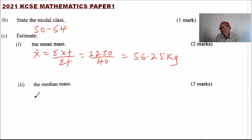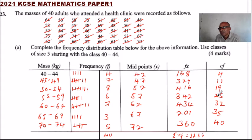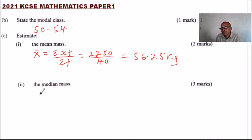Number 2: we are required to find the median. Since we have a total of 40 adults, the median is the 20th person. Looking at the cumulative frequency, up to class 50 to 54 we have 19, and up to 55 to 59 we have 25. So the 20th person lies in the class 55 to 59. That is the median class.